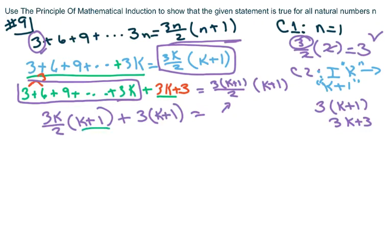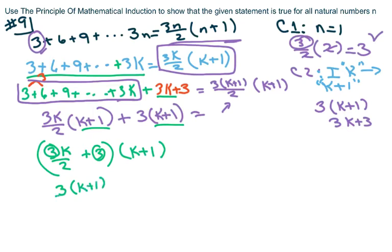Now, what I notice here is these two are the same. So I'm going to factor by grouping. And this would be 3k over 2 plus 3 times k plus 1. Okay, so basically I can factor out a 3 here. We want it to look the same, factor out a 3. So this would be 3k plus 1 over 2.